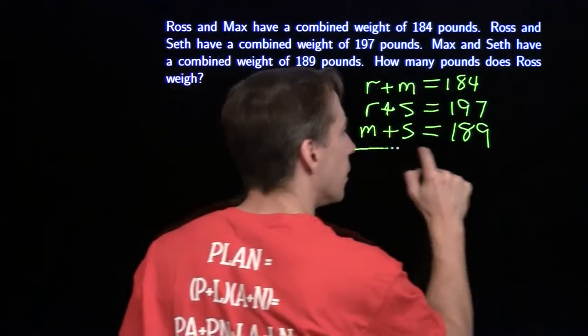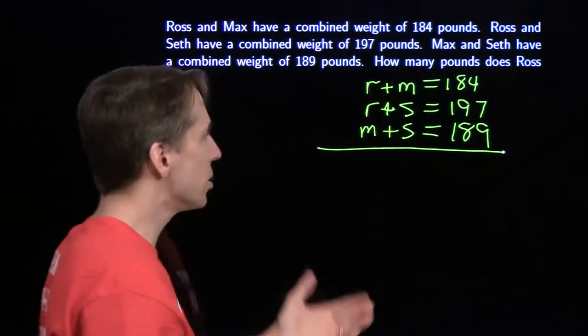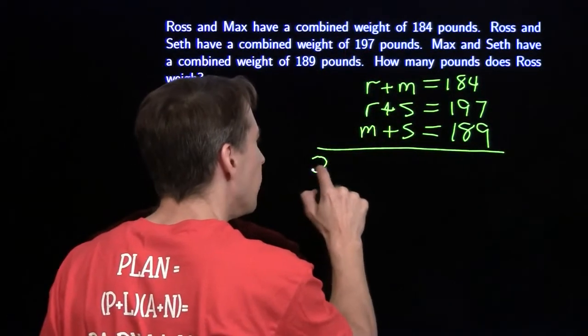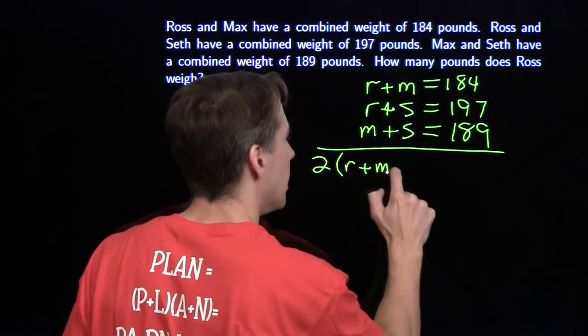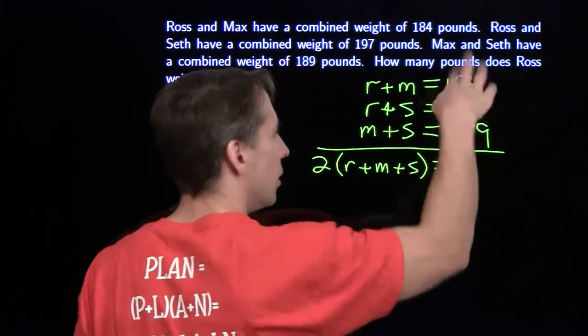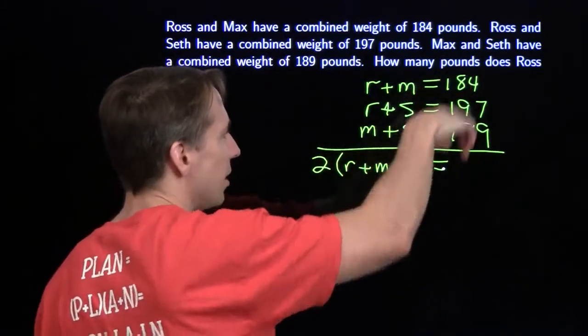I'm just going to add them all. I'm going to add all three equations because that gives me two of each of R, M, and S on the left-hand side. So 2 times the sum R plus M plus S equals the sum of these over here.